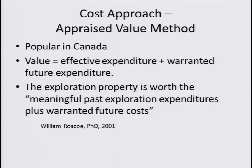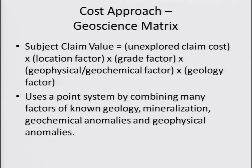Another approach is the geoscience matrix. This takes the unexplored claim cost and a number of other factors — location, grade, geophysical, geochemical, and geology factors — and multiplies them together to come up with some sort of point system and a value for the property. I'm not too familiar with this one other than having researched it.